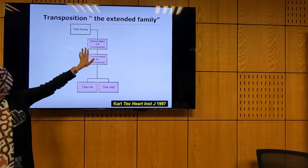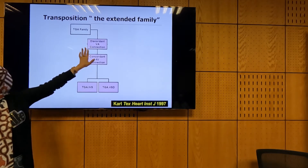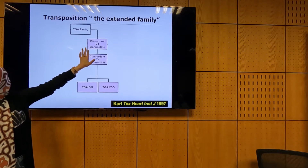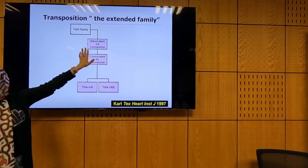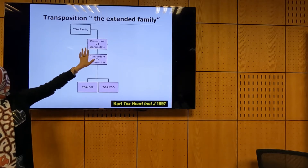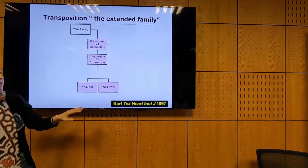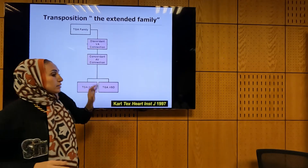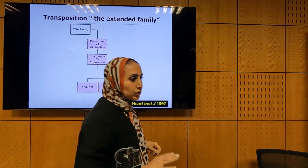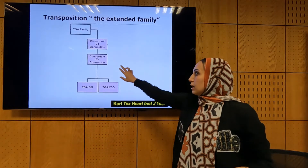Normally the LV gives the aorta. But in TGA, the LV will give the pulmonary artery, and the right ventricle normally gives the pulmonary artery will instead give the aorta. The atrial ventricular connection is normal.